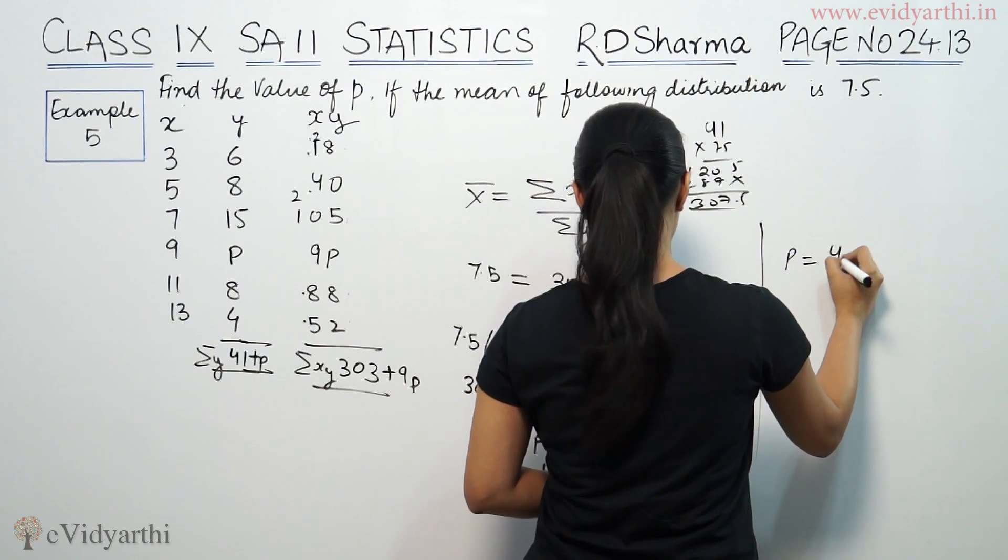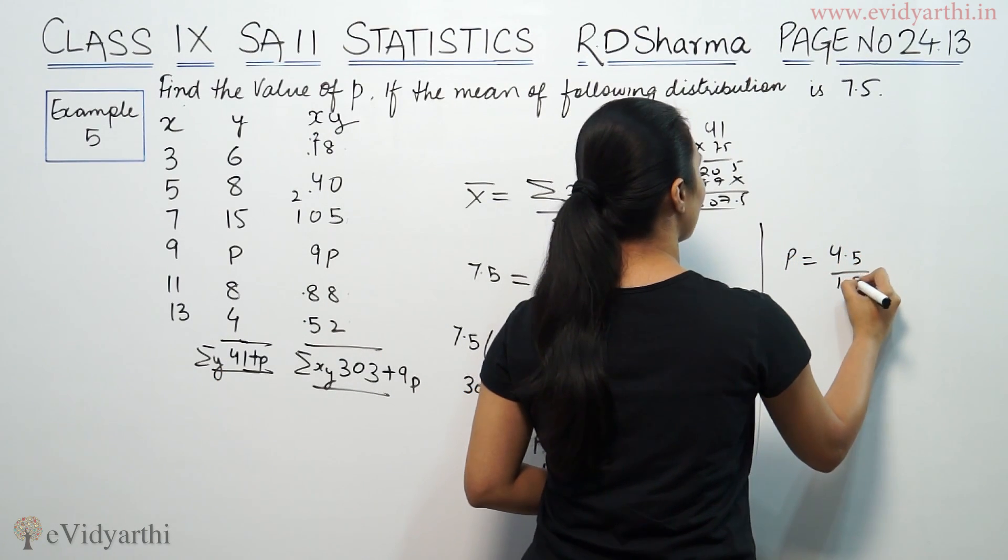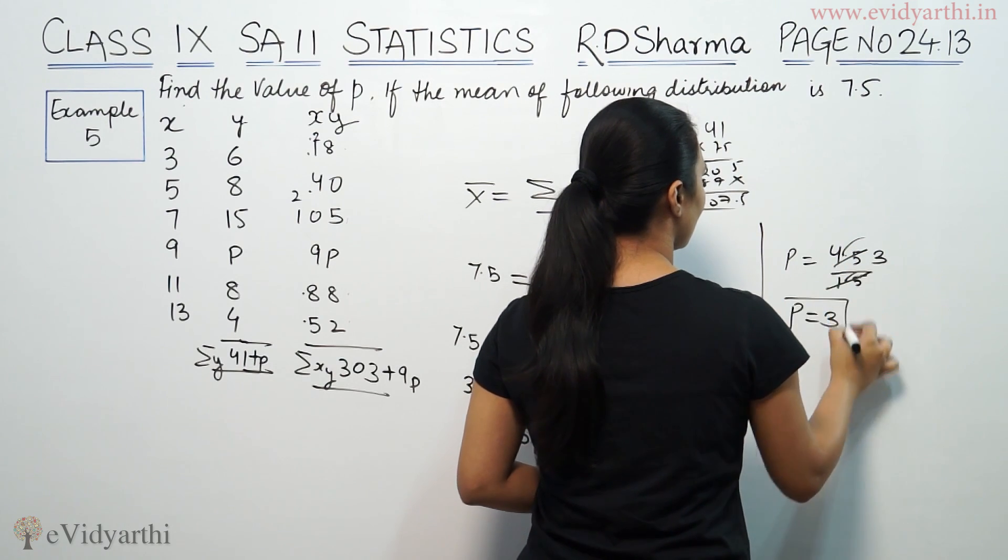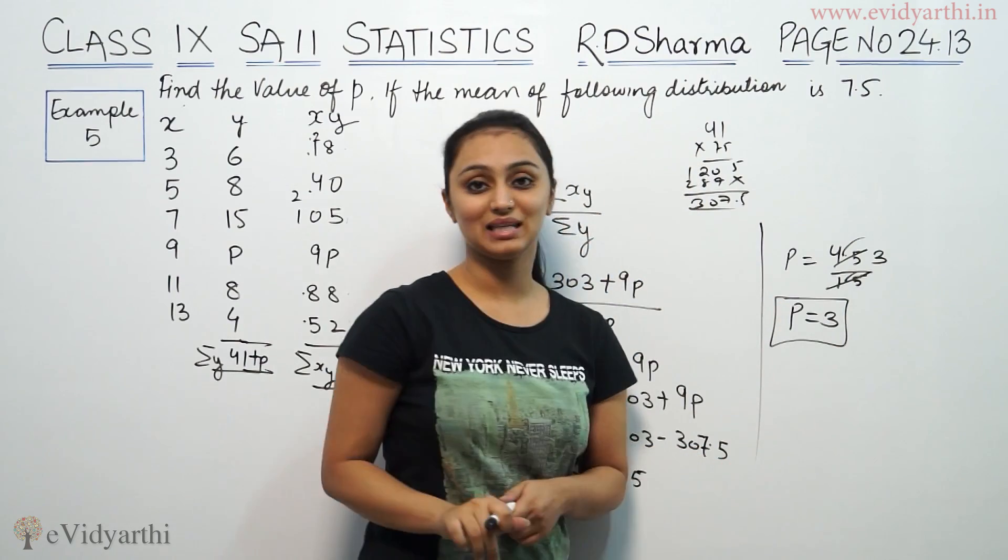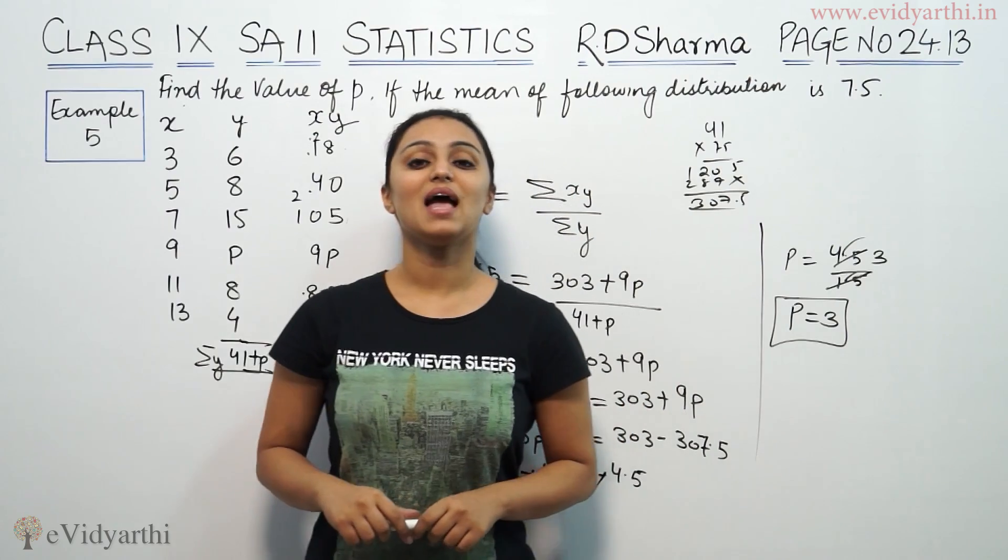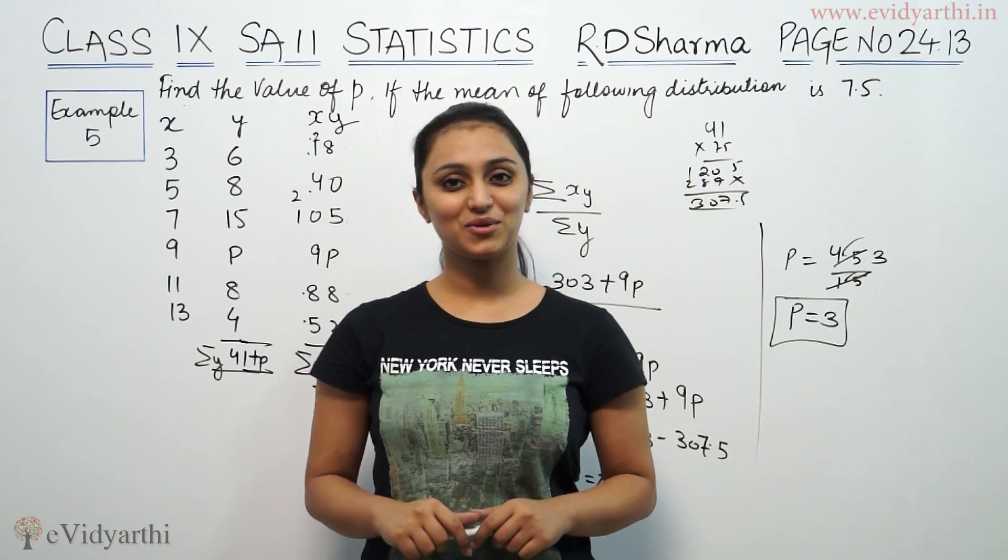So, P is equal to 4.5 by 1.5. Decimal cancels decimal. P value is 3. So, this was example number 5 from R.D. Sharma. And do watch the next video for some more questions. Goodbye.